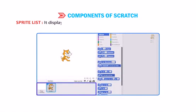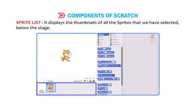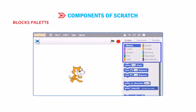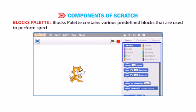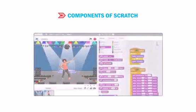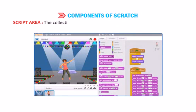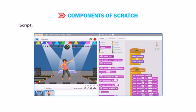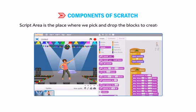The sprite list displays thumbnails of all the sprites we have selected, shown below the stage. The blocks palette contains various predefined blocks used to perform specific tasks. The collection of step-wise instructions given to a sprite is known as a script. The script area is where we pick and drop the blocks to create a script.